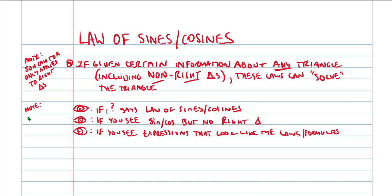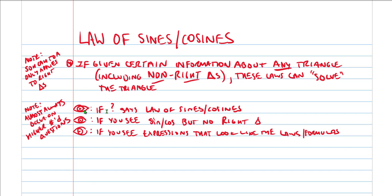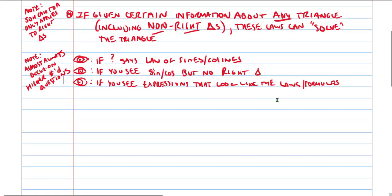One more note: law of sines and cosines questions almost always occur on higher-numbered questions — we're talking about question number 30, maybe 35 and up. Very frequently you'll see them maybe up in the 50s, but we've also seen them go down into the mid-30s. That's how you will know if the question is testing you on law of sines or cosines.